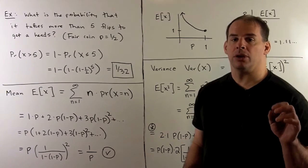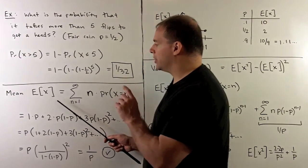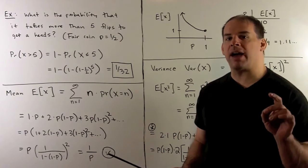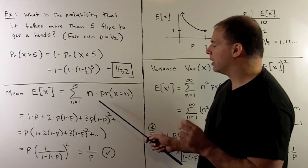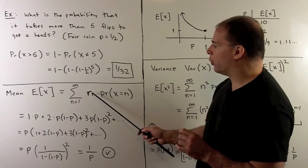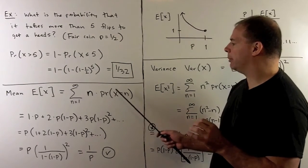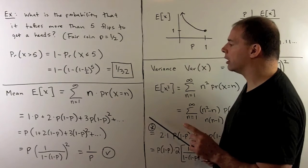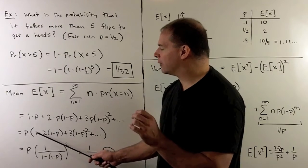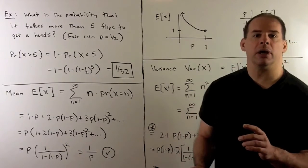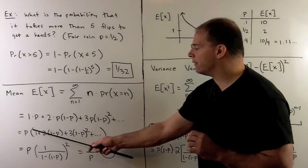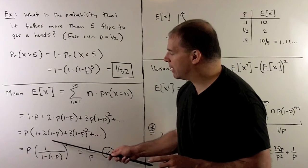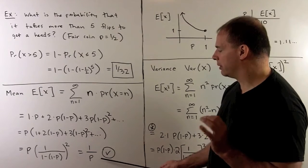Next, the formula for the mean. To get the mean, we take each value N of the random variable, weight it with the probability of getting that value, and sum over all possible values. Writing out the first few terms and factoring out P, what's left is a power series with X equal to 1 minus P, which is between minus 1 and 1, so it converges. The sum equals 1 over (1 minus X) squared, giving 1 over P squared. Multiplying by P gives 1 over P, as stated.